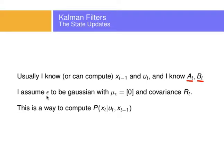I will assume epsilon to be a Gaussian with mean of 0 and a covariance of R_t. A_t, B_t, R_t, X, and mu are all going to be important. This is a proxy way of computing the probability of the state given the actions at that time and the previous state — the picture I just drew.